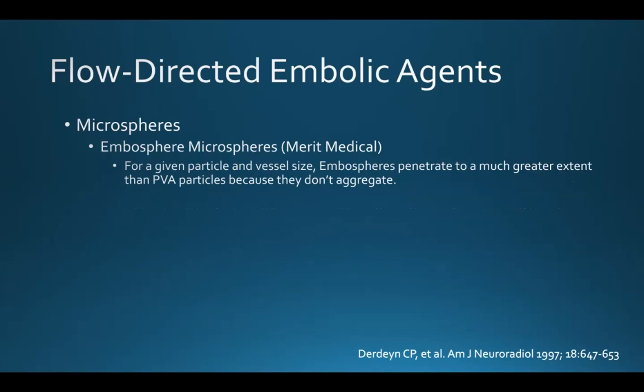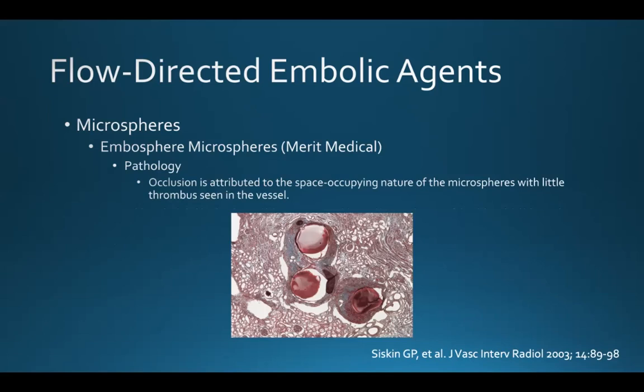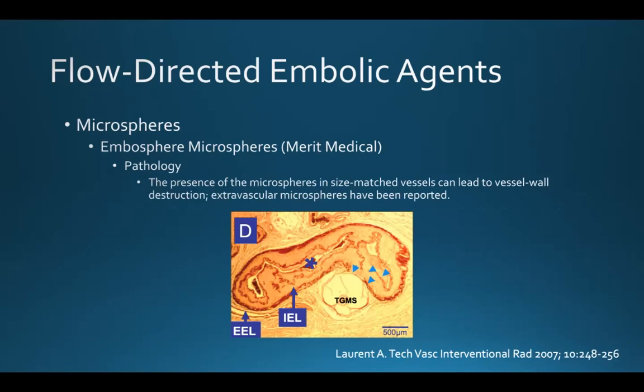Because embospheres don't aggregate, for a given particle and vessel size, they tend to penetrate to a much greater extent — traveling more distally — than particulate PVA. Pathologically, the occlusion seen with embospheres is attributed to the space-occupying nature of the microspheres, with little to no thrombus seen within embolized vessels. These spheres tend to travel to size-matched vessels, which can lead to vessel wall destruction and even extravascular migration of microspheres, which has been reported.